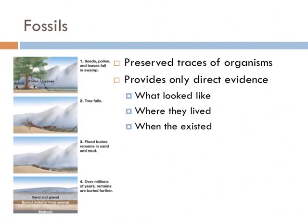Fossils are preserved traces of organisms. They provide the only direct evidence of what those organisms looked like, where they lived, and when they were there. Fossilization happens when once-living organisms get buried by sediment in a process known as sedimentation. Over millions of years, fossils form. As erosion happens, those fossils are exposed and able to be studied by lucky humans.